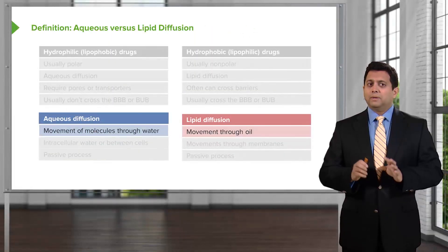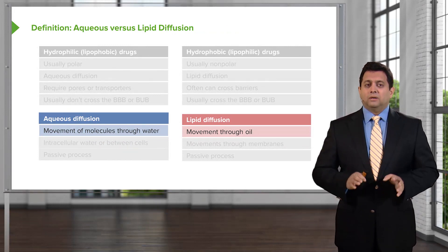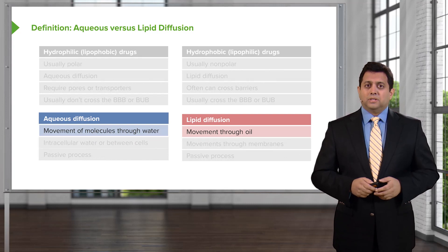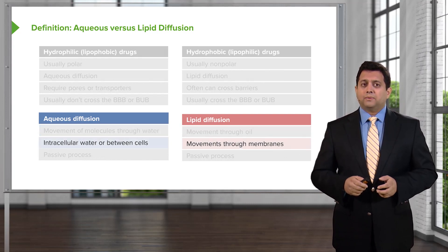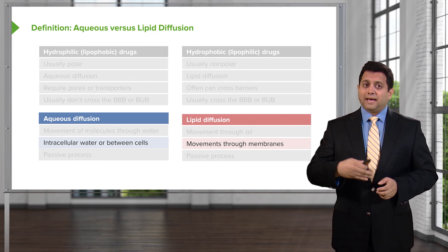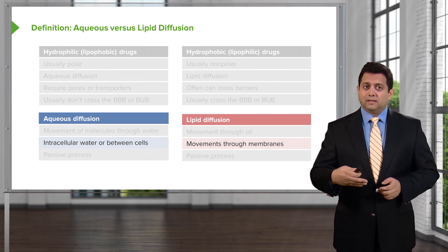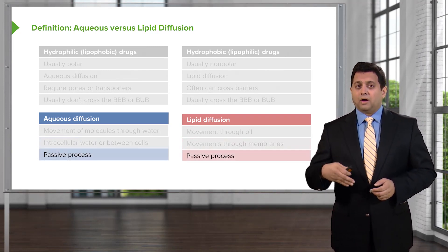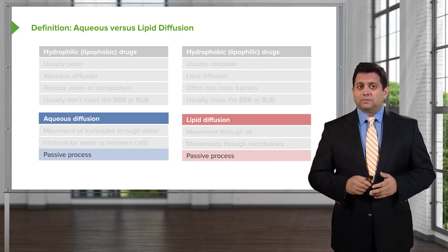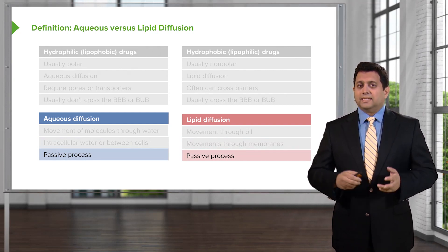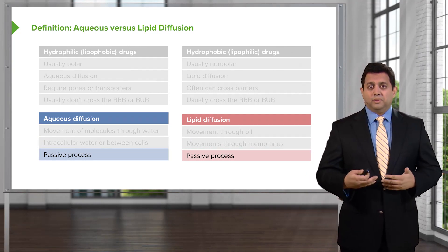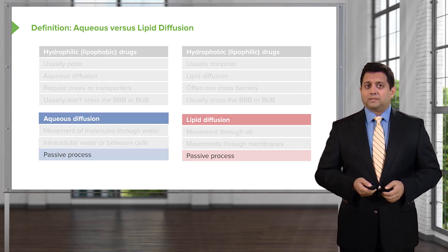When we talk about aqueous diffusion, we're talking about molecule movement through water, and lipid diffusion is through oil. Aqueous diffusion is always dependent on the passage of water between cells or through a pore, and it is a passive process. Similarly, lipid diffusion involves movement through membranes and is also a passive process.